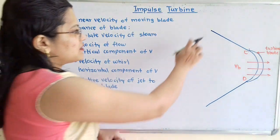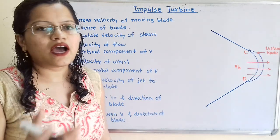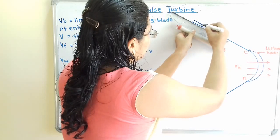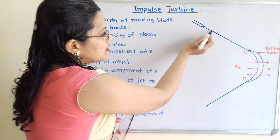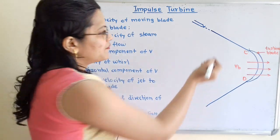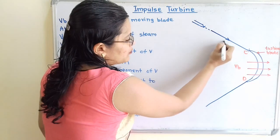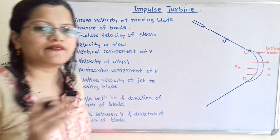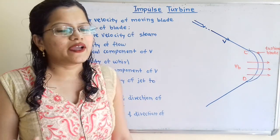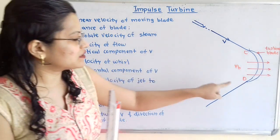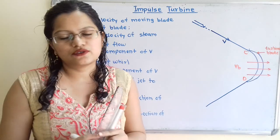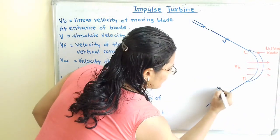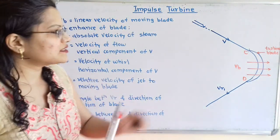These are the two tangents drawn at points C and D. This is the direction of the steam jet, which is formed when steam passes through the nozzle. The steam jet has absolute velocity V in this direction. At the exit point D, the blade leaves with relative velocity Vr1 — using suffix 1 for exit point notation — so the direction of Vr1 is shown here.